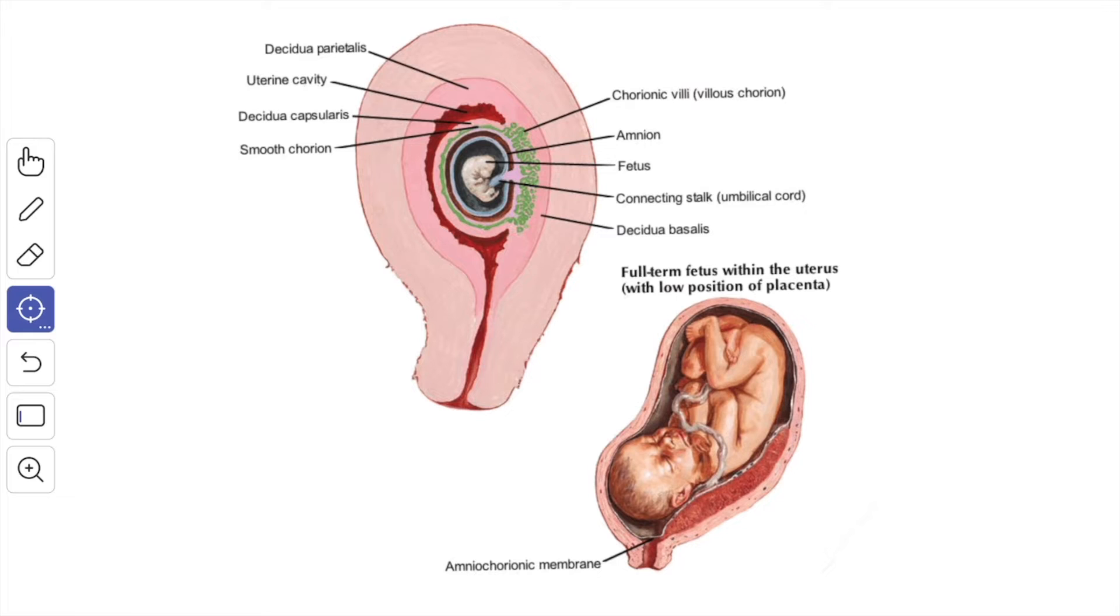During the third month of the pregnancy, the decidua capsularis and the decidua basalis are fused with the regression of the chorion leave. As a result, the persistent chorion frondosum and the decidua basalis together form the human placenta.